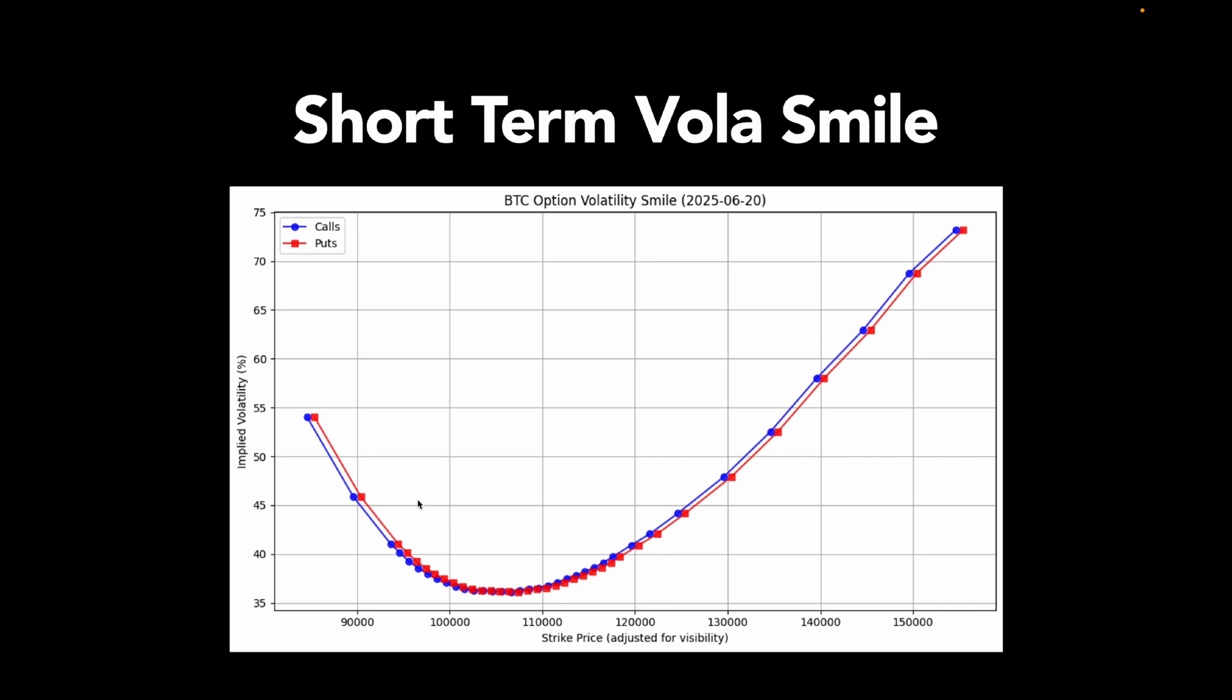And here's something really interesting. There aren't even any quoted options below 85k strike. No puts, no calls, nothing. That's not just a random gap. That's the market saying, we don't even think it's worth quoting protection down there. So yeah, this chart isn't just showing volatility, it's showing conviction. It's telling you where traders still see risk and where they basically don't care anymore.